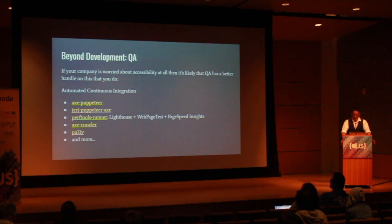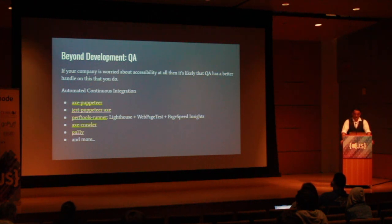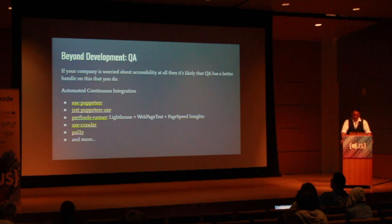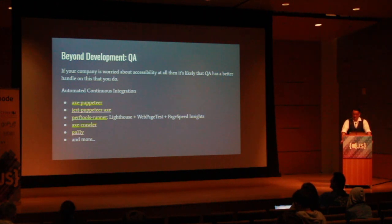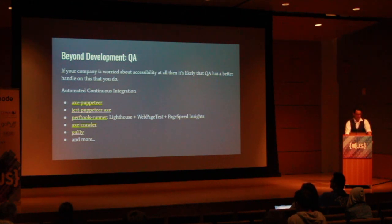Beyond development, there are a wide variety of tools at the QA level — it's a natural fit. If your company is worried about accessibility at all, it's likely they have a QA team with a better handle on it than you do. If they do, then learn from them. Every QA tester I've known has dreaded bringing bugs back to developers. They'll love it if you make their jobs easier, and they may already have some best practices figured out that you can pattern your own manual testing setup off of. Work together on this.